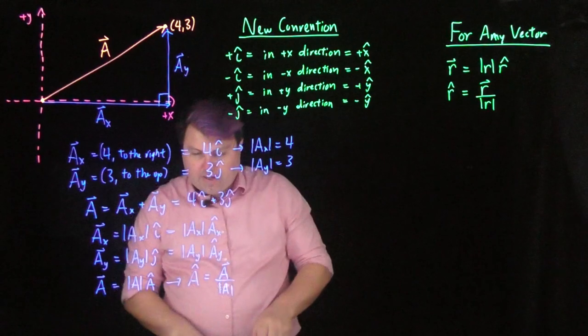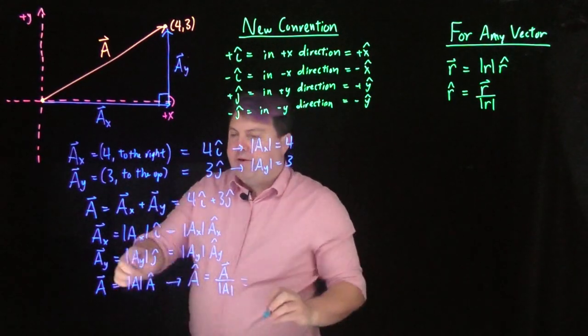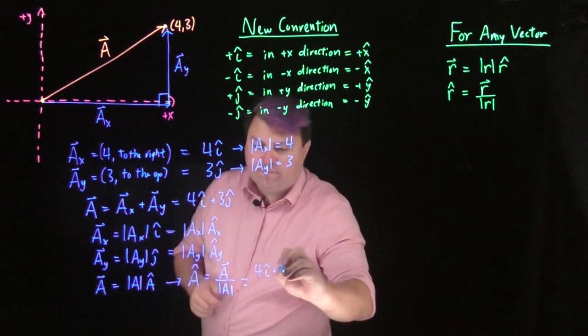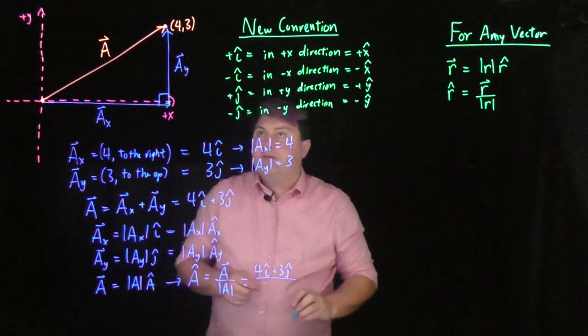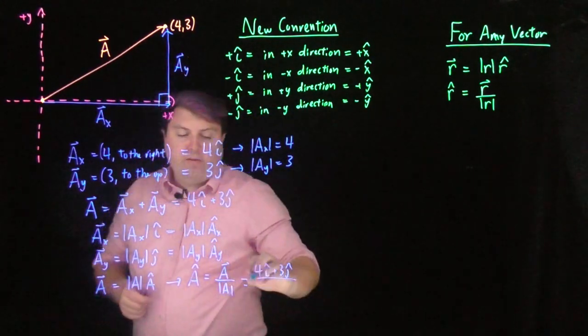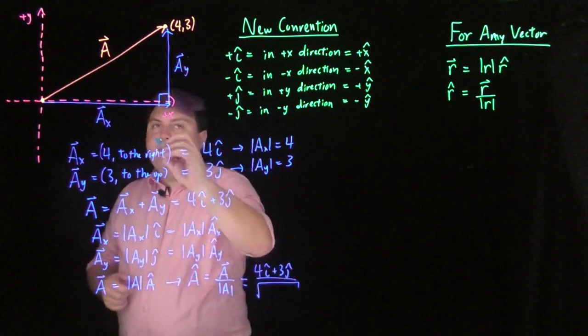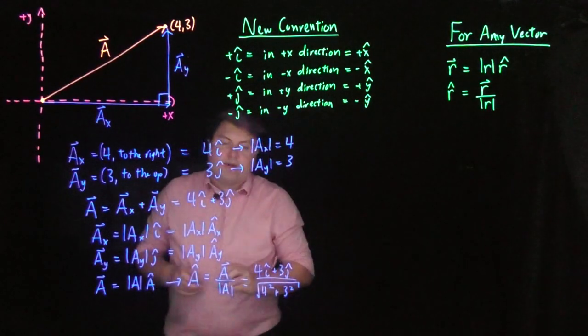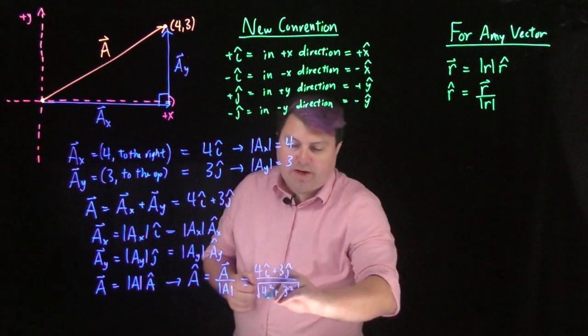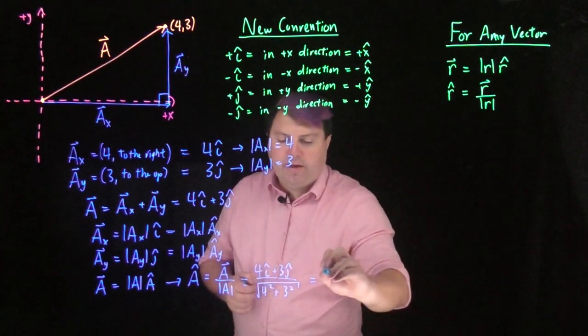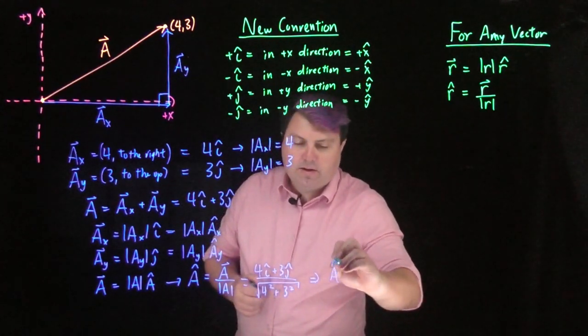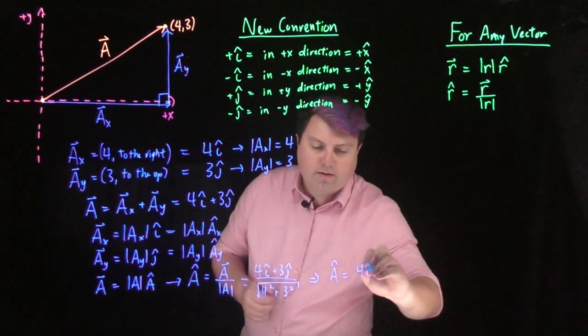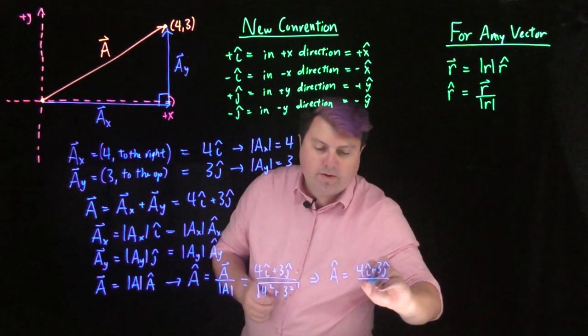So if I'm doing this, I can find a-hat. I know what a-vector is, it's 4i-hat plus 3j-hat. I know what the magnitude of a is, because I can do Pythagorean theorem. I can take the square root of the individual components, 4-squared plus 3-squared. So, 4-squared is 16, 3-squared is 9, so that gives me 25. Square root of 25 gives me 5. So I can get that a-hat is equal to 4i-hat plus 3j-hat over 5.